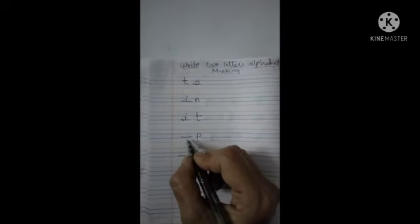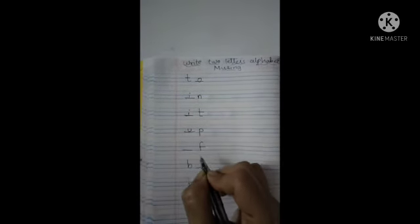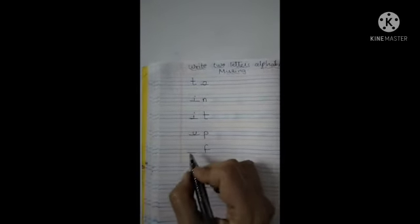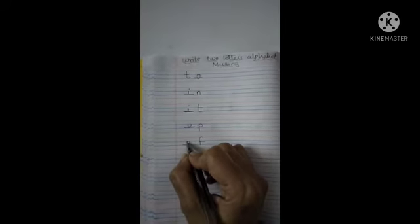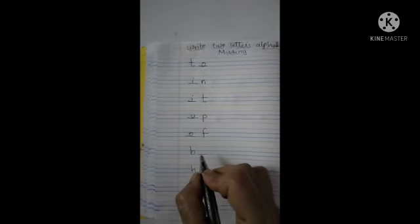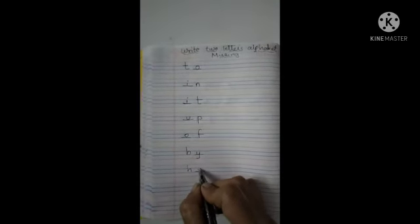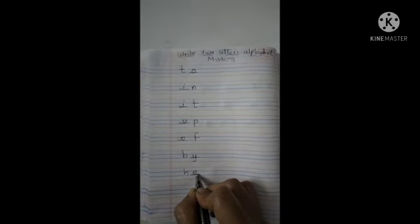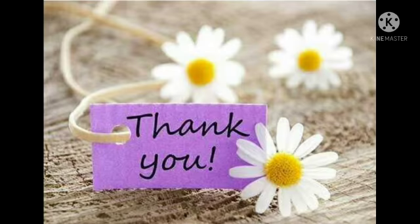Before P what will come, children? U-P: 'up'. Of: O-F. Here B-Y: 'by'. H-E: 'he'. So children, this way you have to complete the two letter alphabet. Thank you.